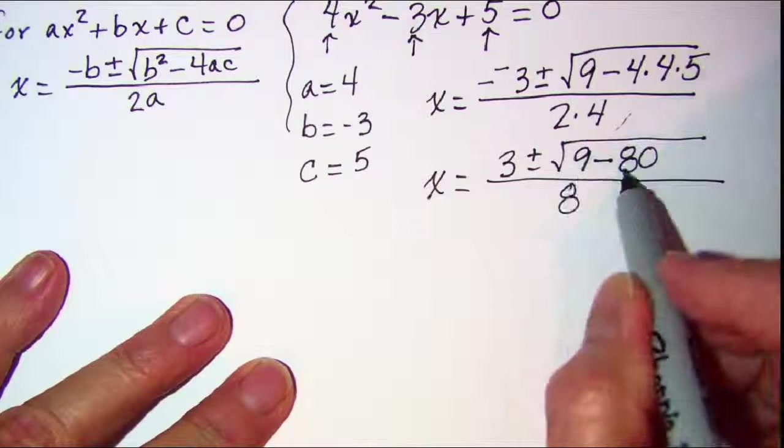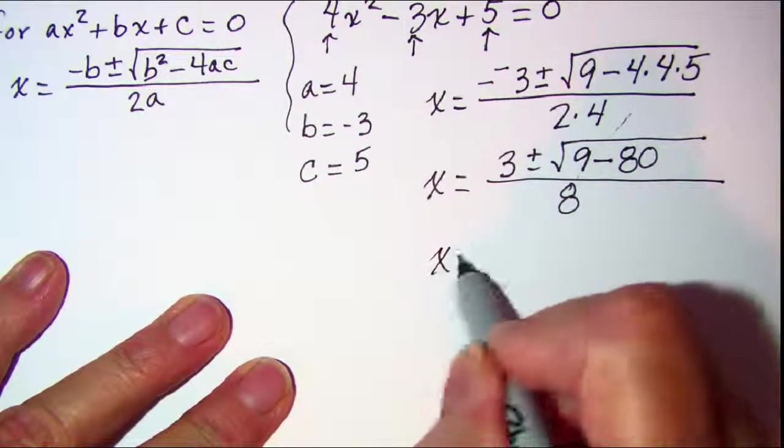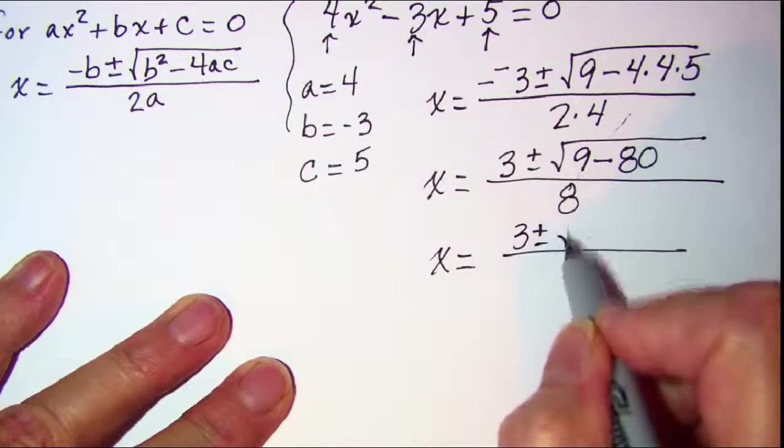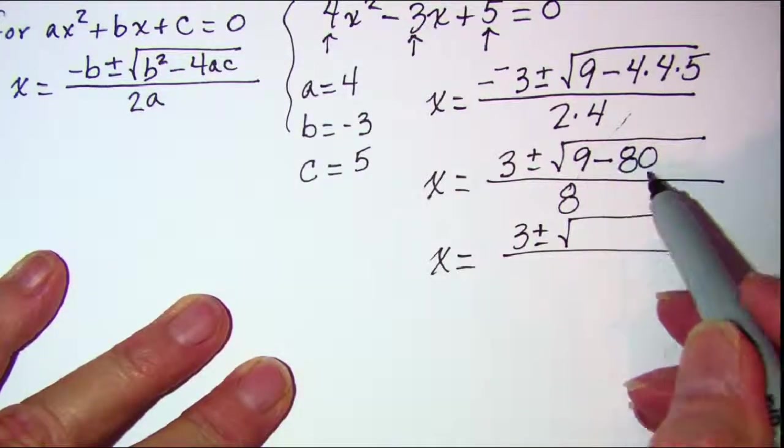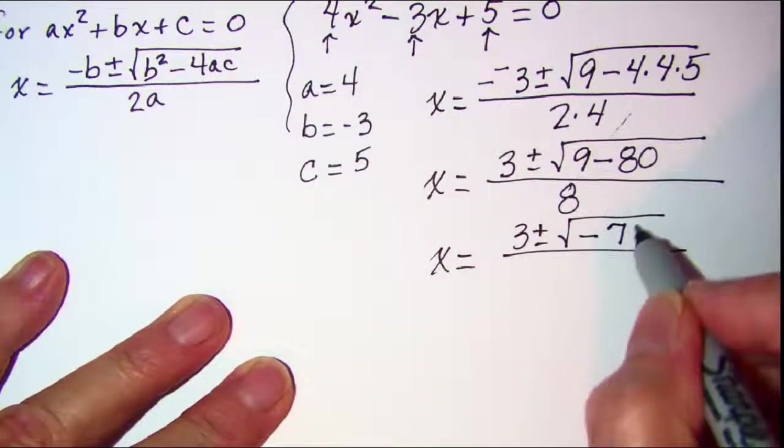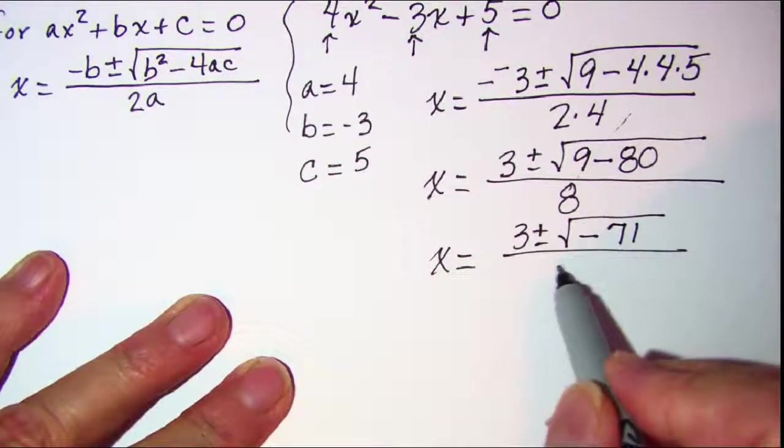Let me do this addition here. X is equal to 3 plus or minus, and then 9 subtract 80 is negative 71, and that's divided by 8.